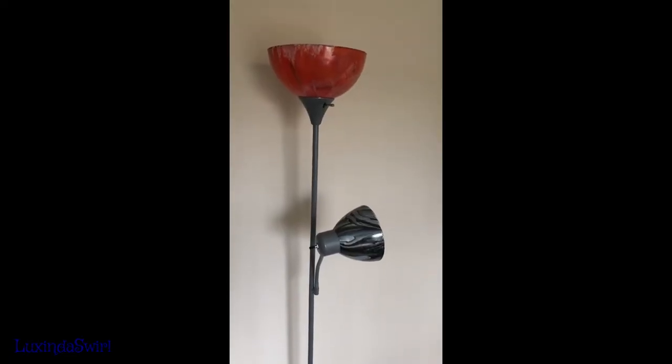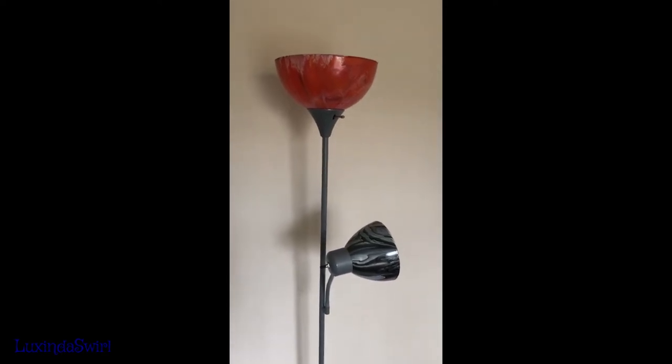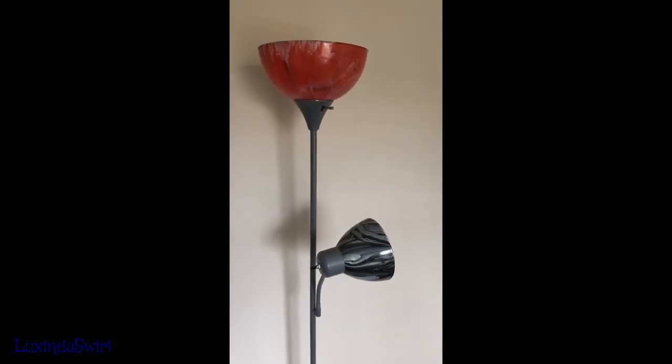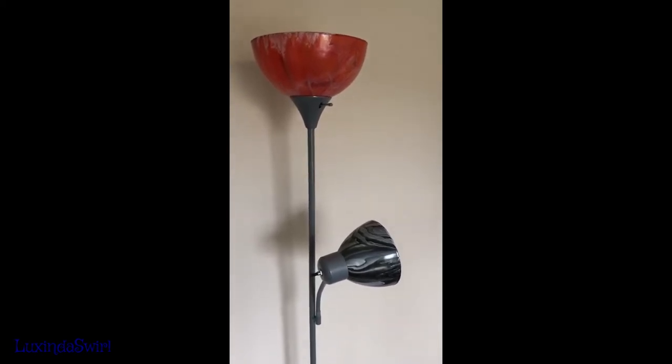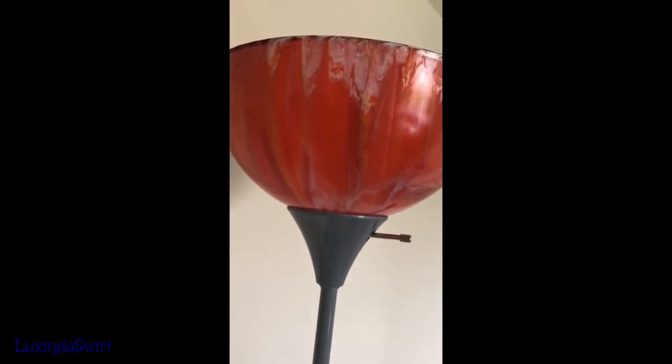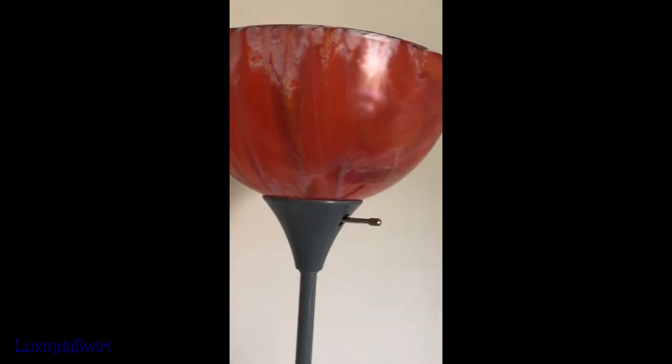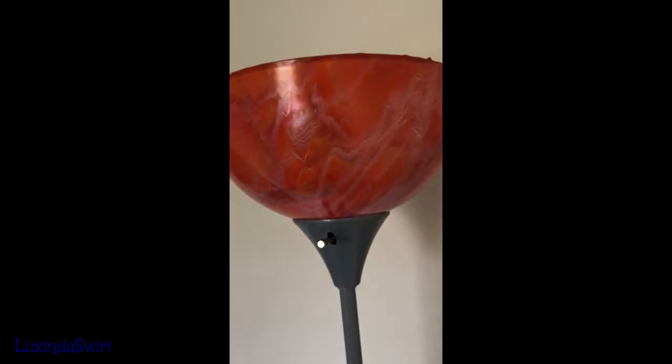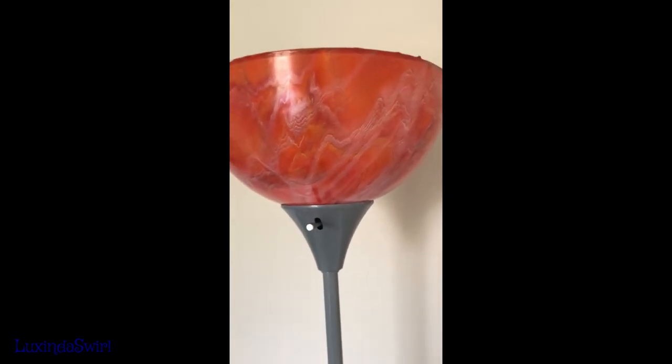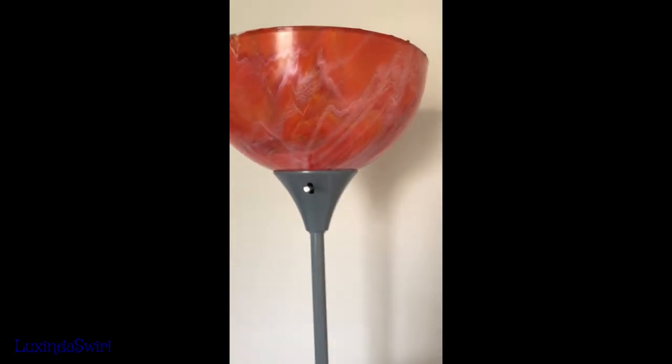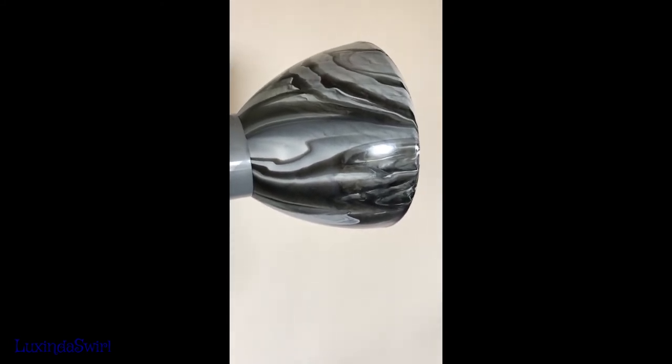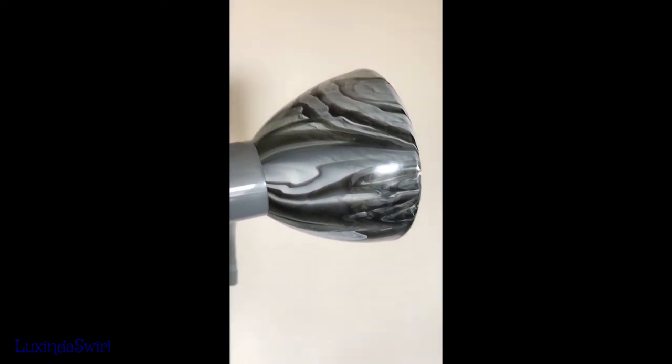And here are the finished lampshades. I'm going to take these off, and let them cure longer, and then clear coat them, but I wanted you to see what they look like on the lamp. Here's the big one, I think it looks gorgeous, absolutely stunning. Try and focus here, oh sorry if it's not. And then the little black and white one, turned out really gorgeous. And now I'll turn them on.